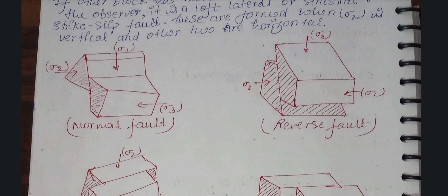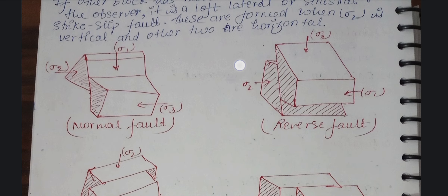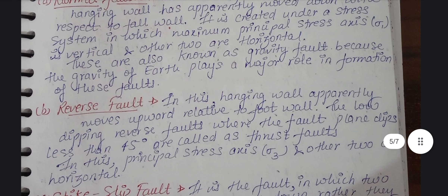Here we have sigma 1, sigma 2, and sigma 3. The fault acts such that the two rock blocks are moving up and down. Sigma 1 is vertical and sigma 2 and sigma 3 are horizontal with respect to sigma 1. These are also known as gravity faults, because the force of gravity plays a major role in the formation of these faults. So this is your normal fault.